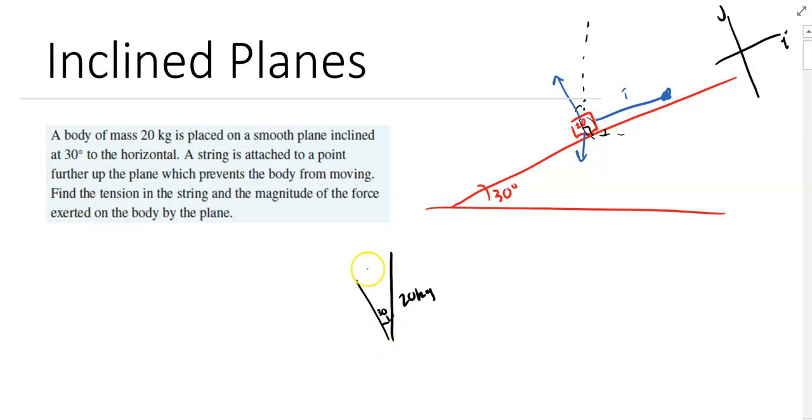30 degrees. And this angle here. And again, think about, so that's the string there. So I'll call that N for the normal contact force. T for the tension in the string.